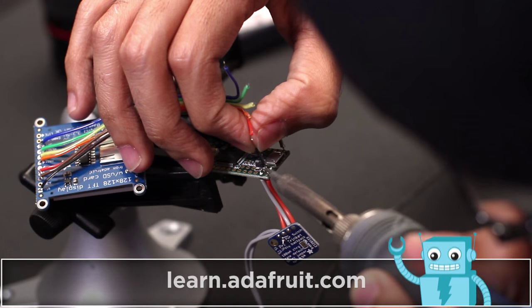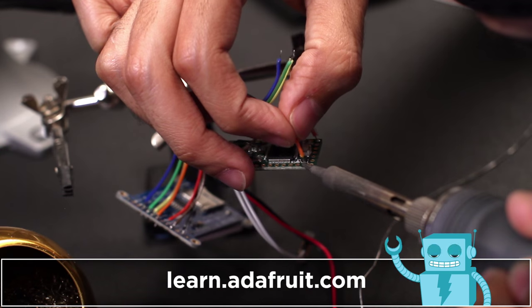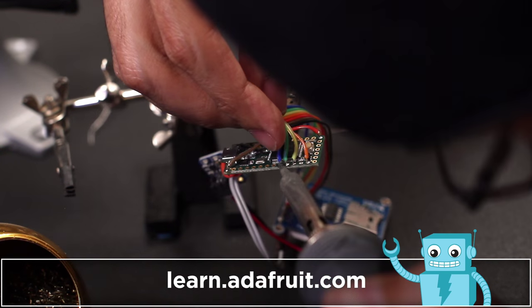Now we can solder these wires from the display to the Teensy microcontroller following the circuit diagram linked below.